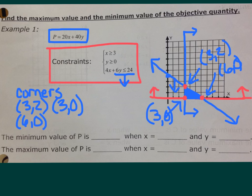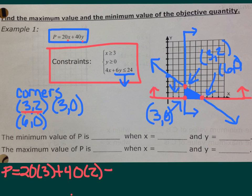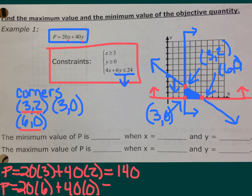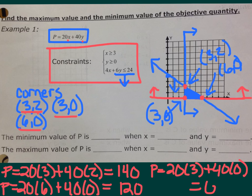We've graphed our system and found the vertices. Now the third step: plug the vertices into the objective quantity. For corner (3, 2): P equals 20 times 3 plus 40 times 2, giving us 140. For corner (6, 0): P equals 20 times 6 plus 40 times 0, giving us 120. For corner (3, 0): P equals 20 times 3 plus 40 times 0, giving us 60. Our profit values are 140, 120, and 60.